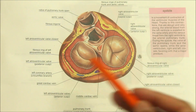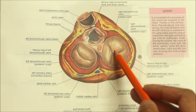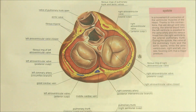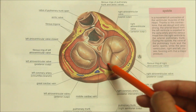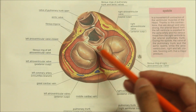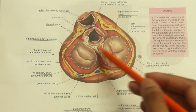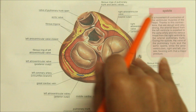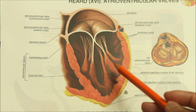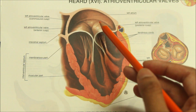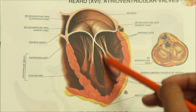Now let's look at the atrioventricular valves in detail. This is a superior view showing the right and left atrioventricular valves. Both valves are made up of a fibrous ring, as you can see here. They have cusps which are flat and project downward into the ventricular cavity. In the cross section of the left atrioventricular valve, the valve is made up of a fibrous ring, and the cusps are flat and project into the ventricular cavity.